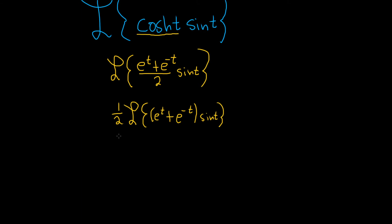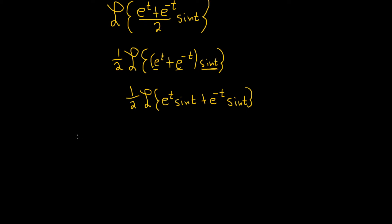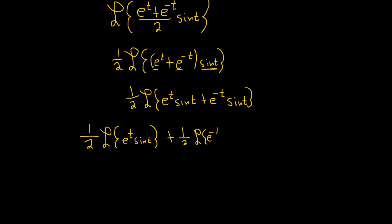Let's go ahead and distribute the sine. So this is one-half times the Laplace transform of e to the t times the sine of t, plus e to the negative t times the sine of t. Since the Laplace transform is linear, we can break this up into two Laplace transforms: one-half times the Laplace transform of e to the t sine t, plus one-half times the Laplace transform of e to the negative t sine t.